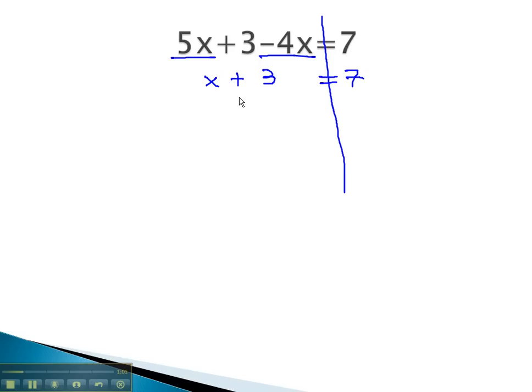We can now solve this equation by getting rid of the three positives with three negatives on both sides. This leaves the x on the left and 4 on the right. x is equal to 4.